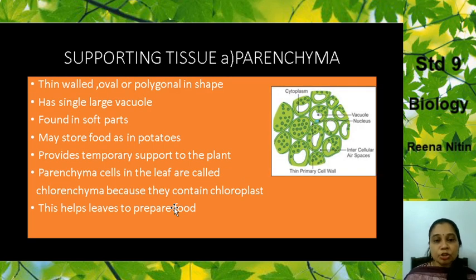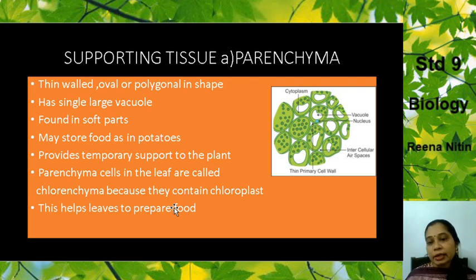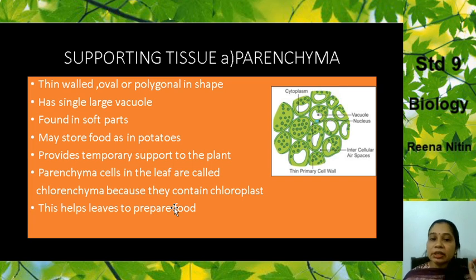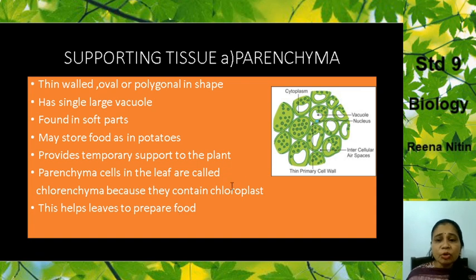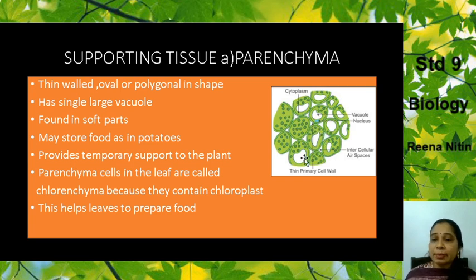Now we come to the second type of tissue — the supporting tissue. Under supporting tissue there are three types: Parenchyma, Collenchyma, and Sclerenchyma. First we will study the first type — Parenchyma. You can see the diagram here — these are the cells of the Parenchyma tissue.